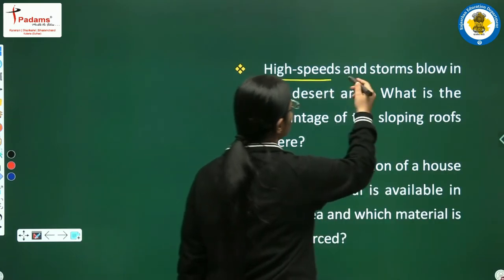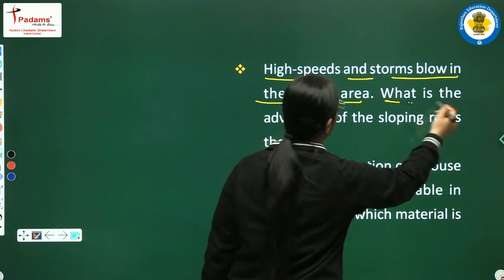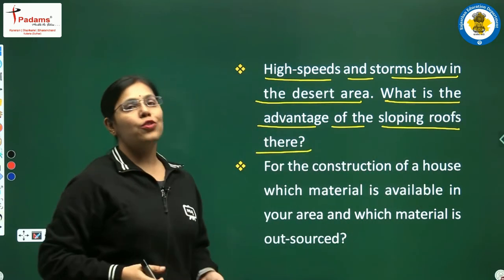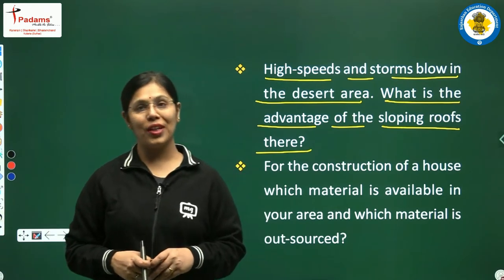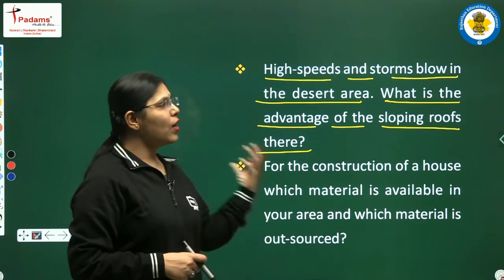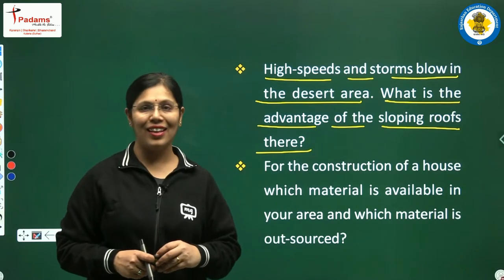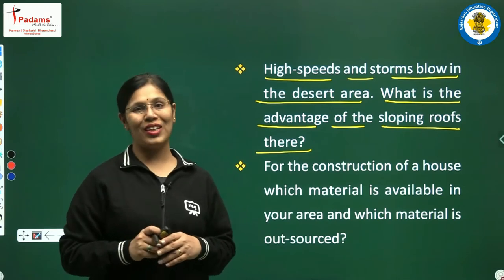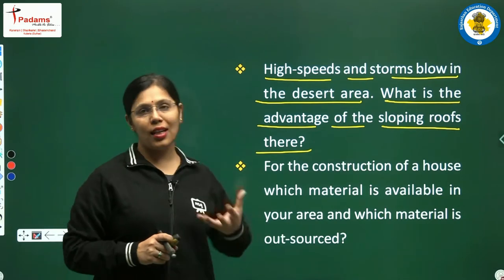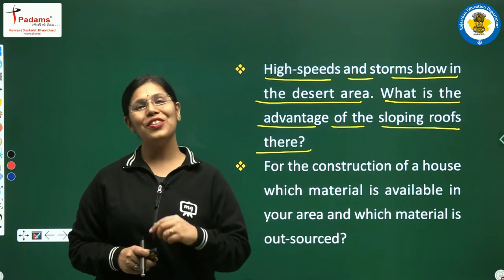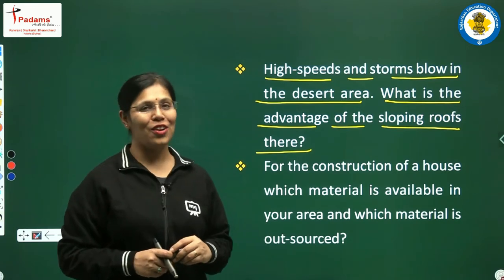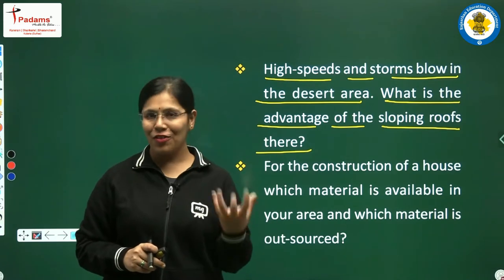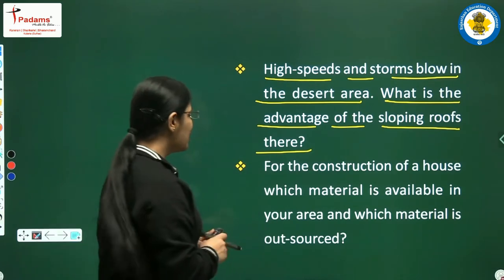Second: high-speed sandstorms blow in the desert area. What is the advantage of the sloping roof there? Jo desert area hota hai, jo registan ka ilaqa hota hai, wahan kaafi tez gati se havaen aur toofan aate hain. Toh aisi jagahon par jo sloping roof hoti hai — yaani tirchi chhat hoti hai — toh wo tirchi chhat kya koi faida pahunchati hai? Try to find the answer.